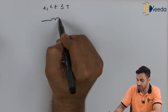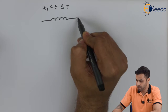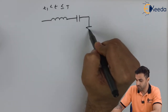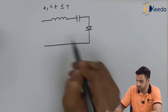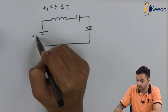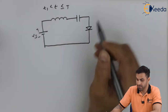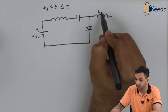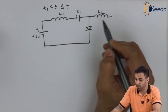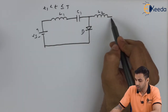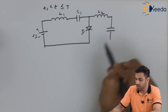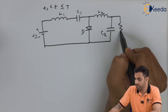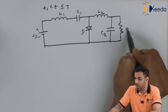During the off-time, from T1 to T, the switch is open. The circuit then consists of source voltage VS, the second inductor L2, first inductor L1, capacitor C1, diode D, second capacitor C2, and the resistive load R.